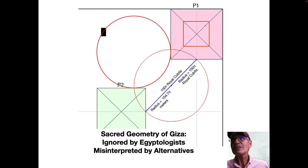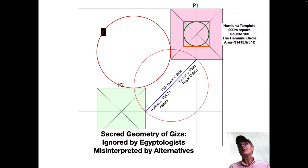Now, I have discovered if you've watched my programs before the Hemayunu template, that 200 royal cubits square that's in the Great Pyramid. If you inscribe a circle on the inside of it, of course, the area will be basically 1000 times pi, 31415.9 royal cubits squared.